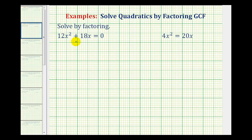So for 12x squared plus 18x equals zero, we want to factor out the greatest common factor of these two terms, which would be 6x, but just in case we have a hard time determining the greatest common factor, it may be helpful to expand these into prime factor form.